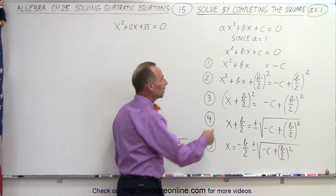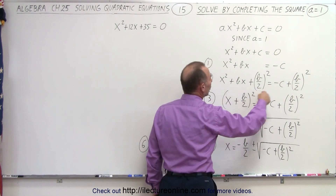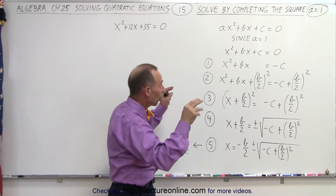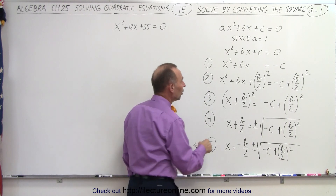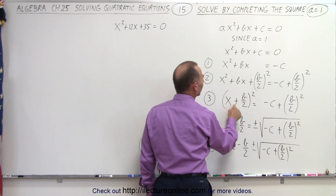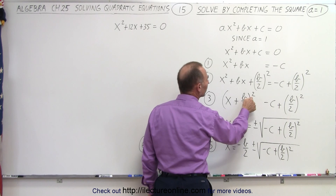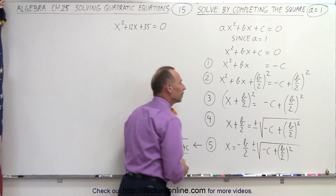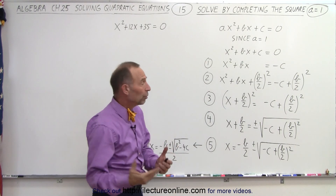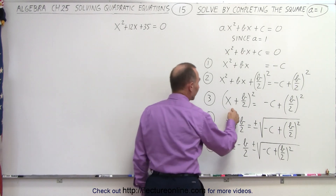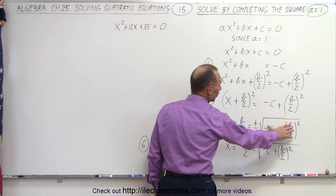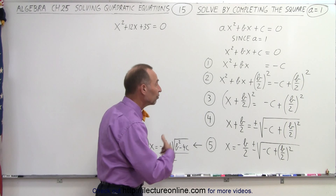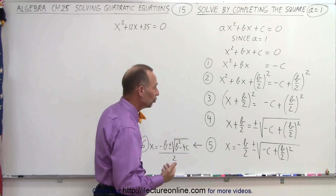Next, we realize that on the left side, we now have something we can write as the square of a single binomial — that's what we call the completion of the square. So this can be factored as x plus b over 2, quantity squared. On the right side, we still have minus c plus b over 2 quantity squared. Then we take the square root of both sides. Taking the square root of the left side gives us x plus b over 2, and we need both the positive and the negative square root of the right side as the two possible answers.